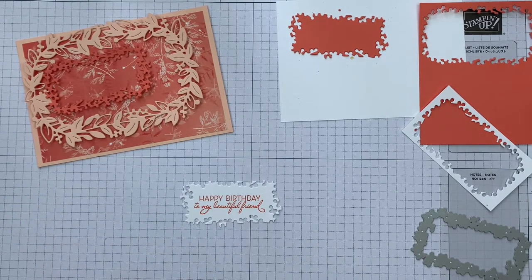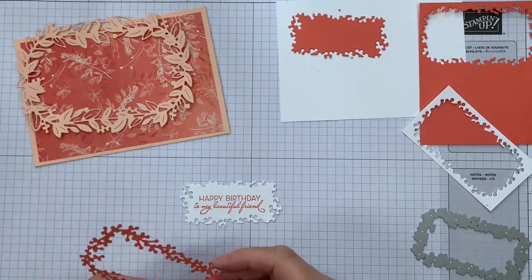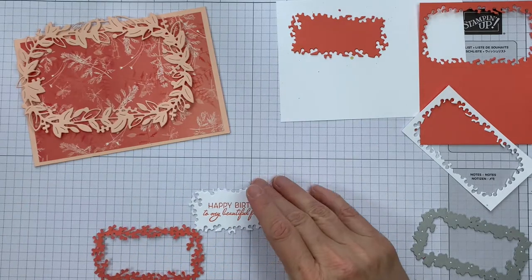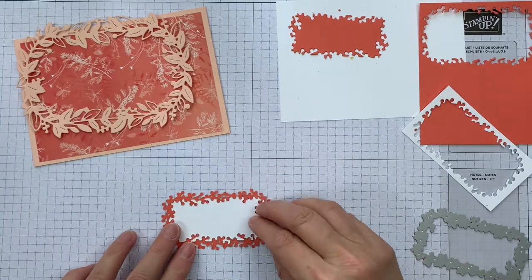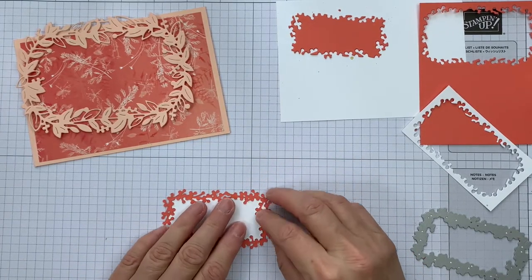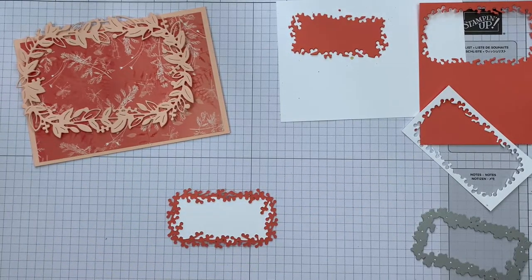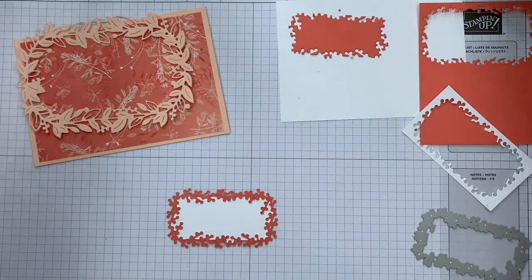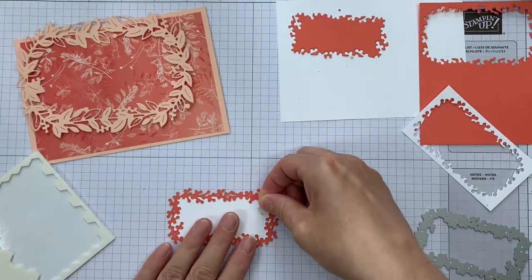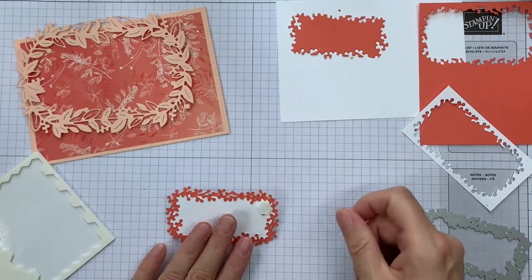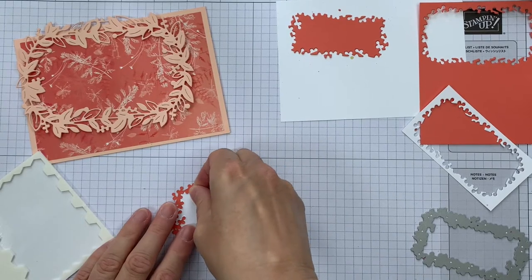And then what I'm going to do is put this back in place. I'm actually going to do it upside down so that I can pop my dimensionals or mini dimensionals on the back here. And I am actually going to go with the dimensionals. What I'm going to do is cover over a few places where I've got both pieces.